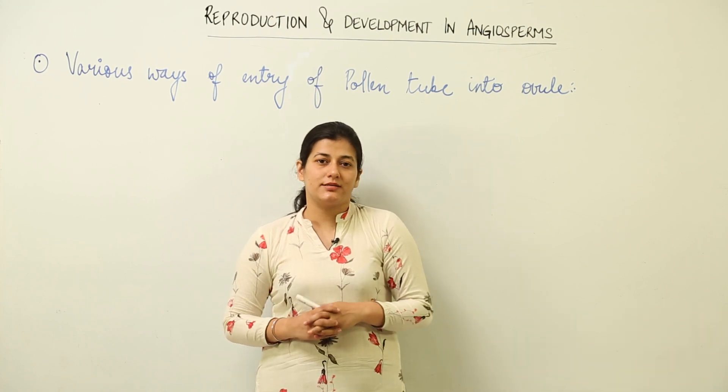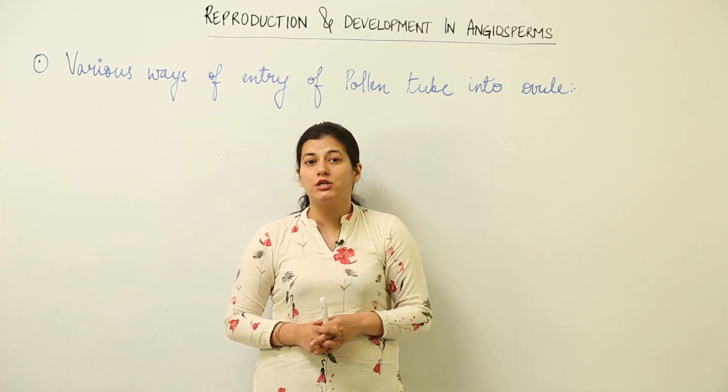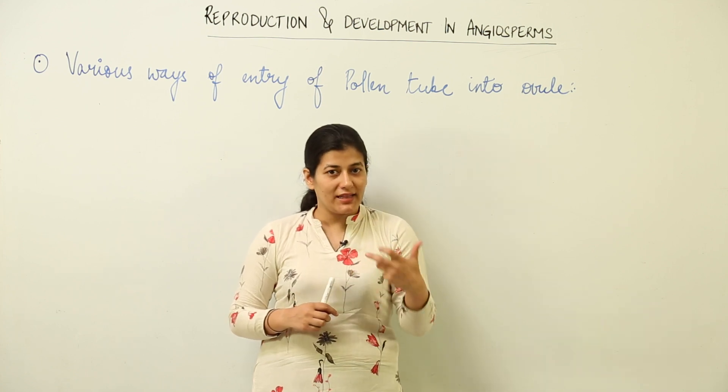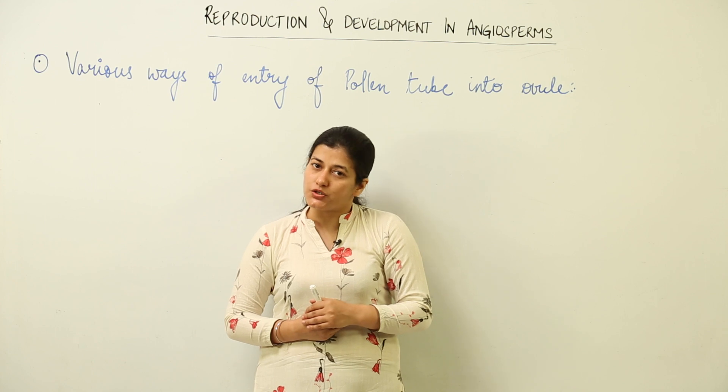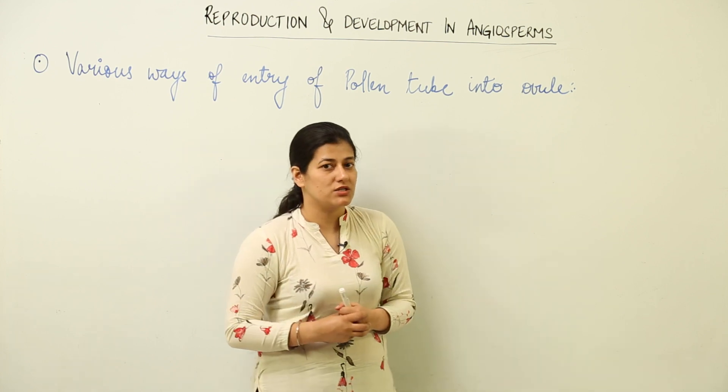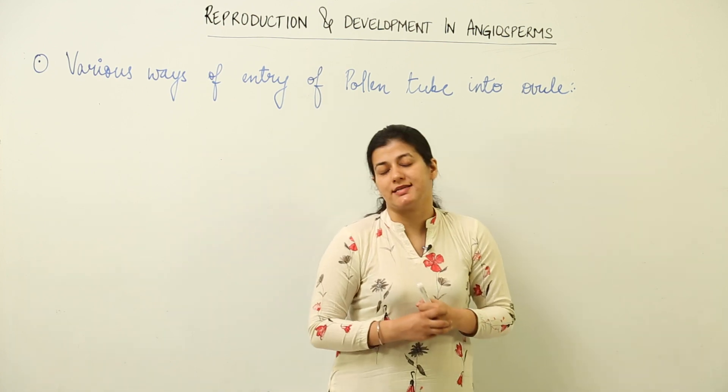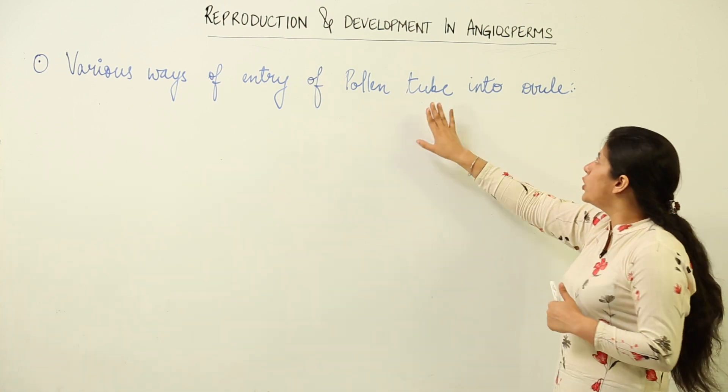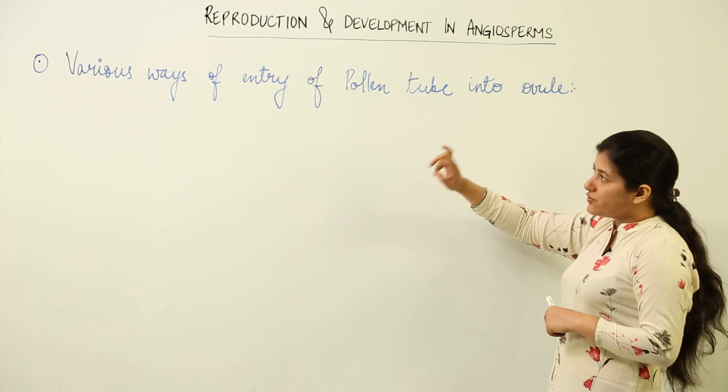Now we have to trace the development in which the pollen tube reaches the ovule and then the male gamete enters into the embryo sac. That is what is to be studied in this lesson. Our topic is various ways of entry of pollen tube into the ovule. I have not mentioned pollen grain because it is not the pollen grain that makes the passage.